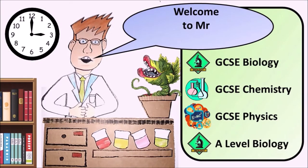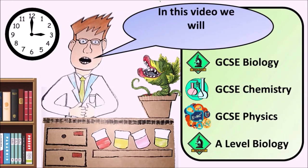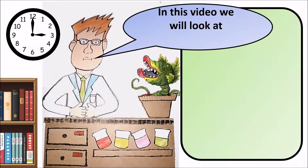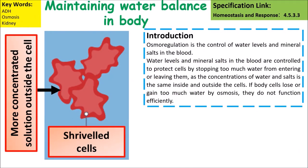Welcome to Mr. Chalk's revision tips. In this video we will look at controlling water, urea, and the kidneys. Osmoregulation is the control of water levels and mineral salts within the blood.